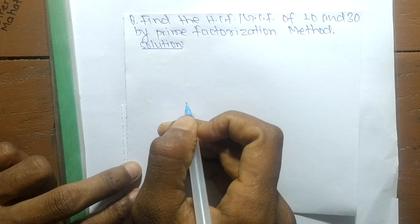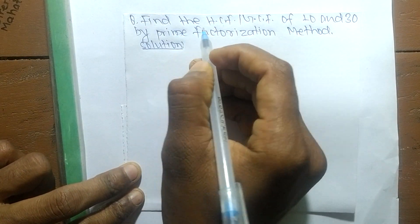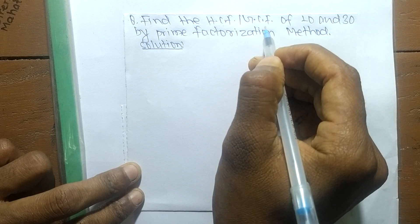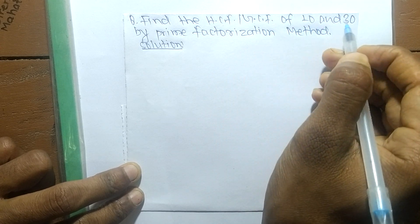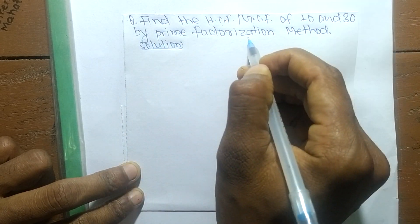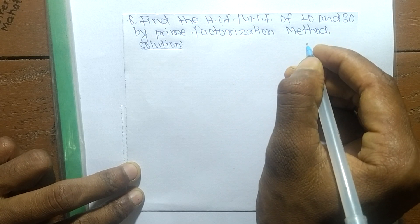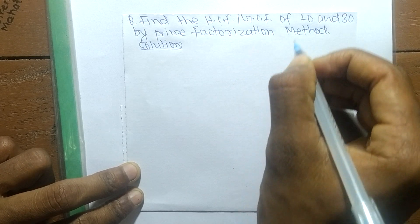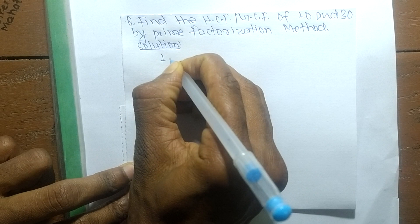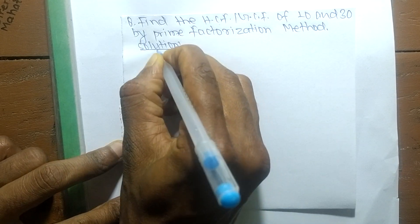Today in this video we shall learn to find the HCF or GCF of 10 and 30 by prime factorization method. First, we find out the prime factors of 10 and 30.